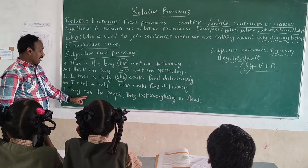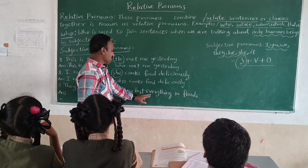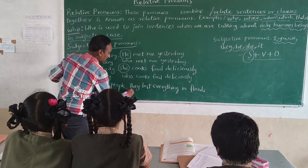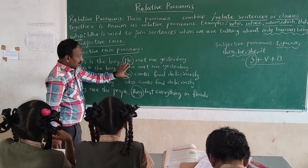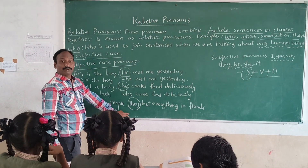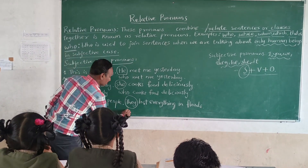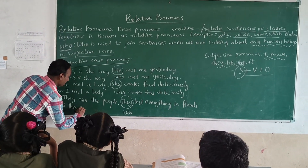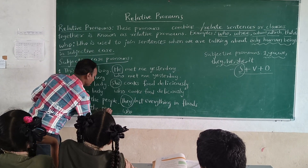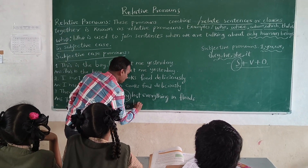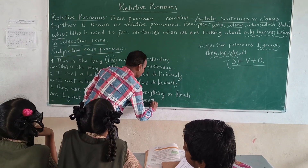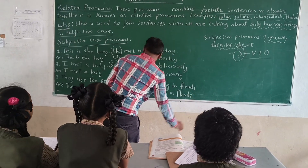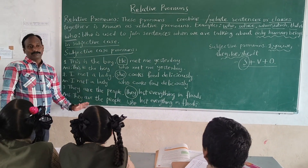Now the third one: 'They are the people. They lost everything in floods.' Here 'they' is a subjective pronoun. If you find subjective pronouns, we have to use the relative pronoun 'who'. So the answer is: 'They are the people who lost everything in floods.' In this way we use the relative pronoun 'who'.